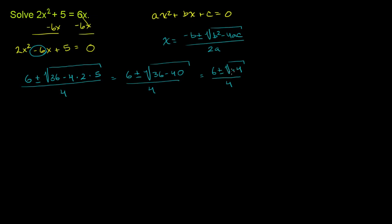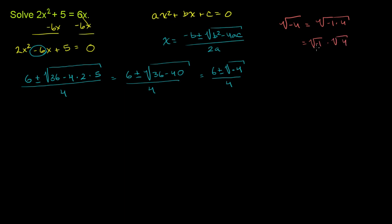The square root of negative 4 is the same thing as 2i. We can see this because the square root of negative 4 equals the square root of negative 1 times the square root of 4, which equals i times 2. The principal square root of negative 1 is i, and the principal square root of 4 is 2, so this is 2i.